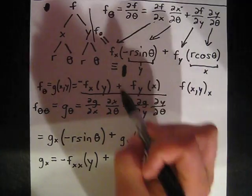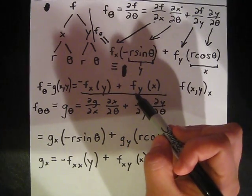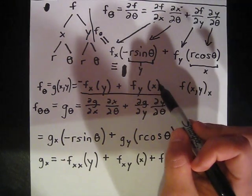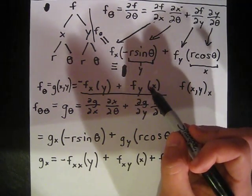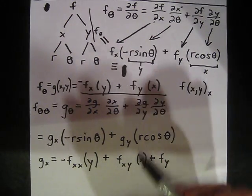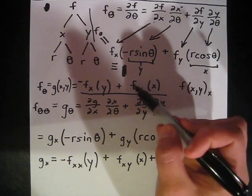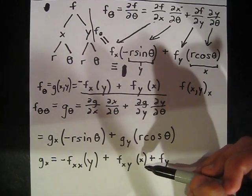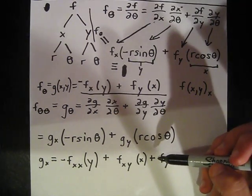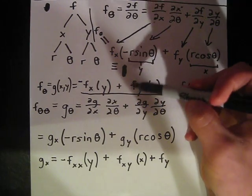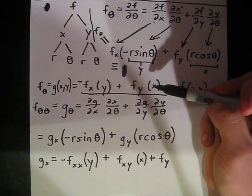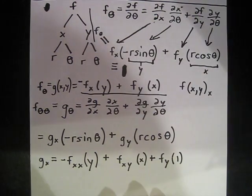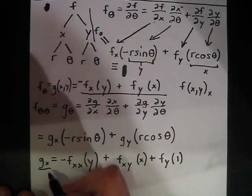So g sub x equals negative f sub xx times y, plus f sub xy times x, plus f sub y. Now let's find g sub y. Each term in g has a y in it, so we need the product rule throughout. For the first term, negative f sub x times y: the derivative of f sub x with respect to y is f sub xy, multiplied by y, plus f sub x times 1. So that term contributes negative f sub xy times y, minus f sub x.